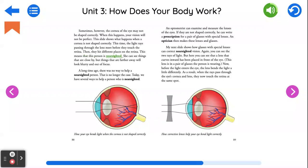This means that this person is nearsighted. She can see things that are close by, but things that are farther away will look blurry and out of focus. A long time ago, there was no way to help a nearsighted person. That is no longer the case. Today, we have several ways to help a person who is nearsighted.